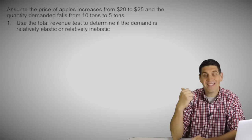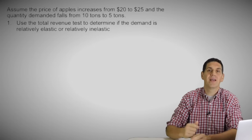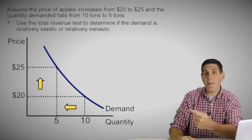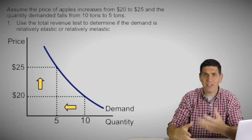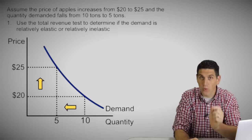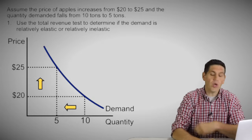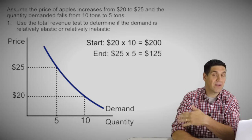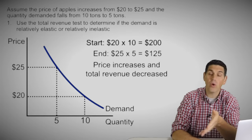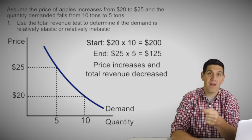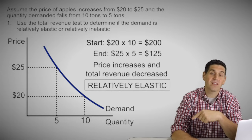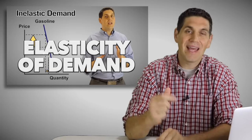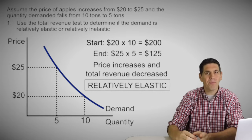Question one is asking you to use the total revenue test to figure out if demand is elastic or inelastic given these numbers. First thing to notice: the price went up from 20 to 25 and the quantity went down, which is exactly what happens because of the law of demand. The question is not asking what happens to quantity when price goes up — it's asking what happens to total revenue. Does total revenue go up or go down? The price started at 20, so 20 times 10 is $200. Then the price went up to 25 and quantity went down to five, so 25 times five is $125. Total revenue went down when the price went up. If total revenue goes down when price goes up, that means this demand curve is relatively elastic.